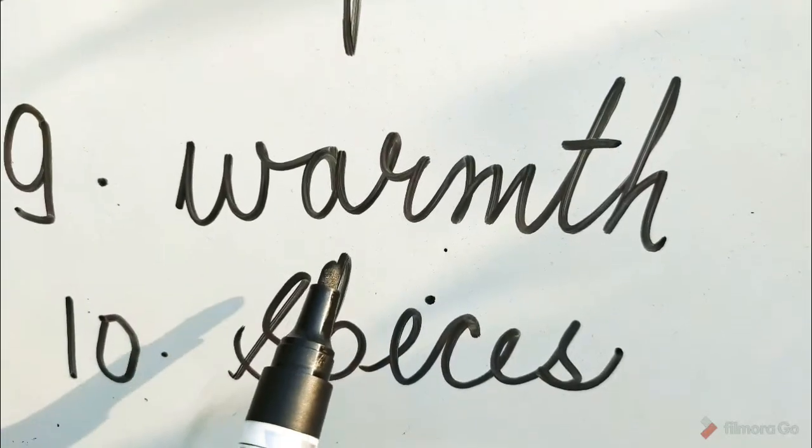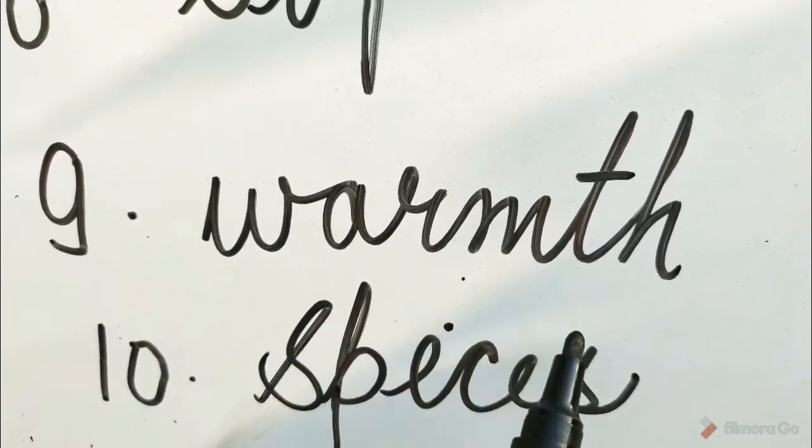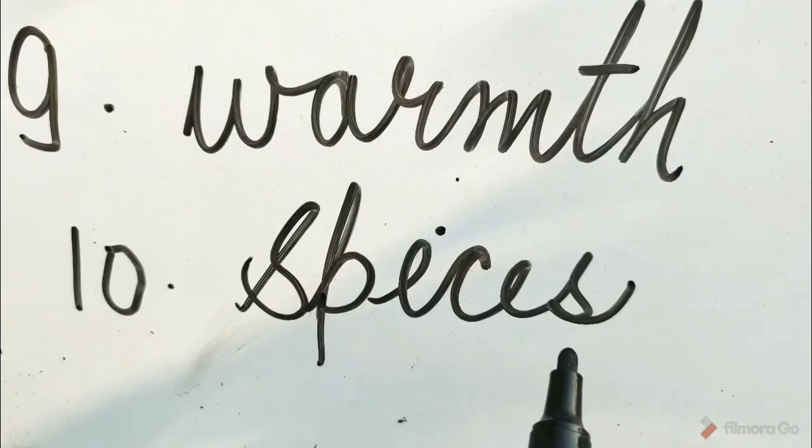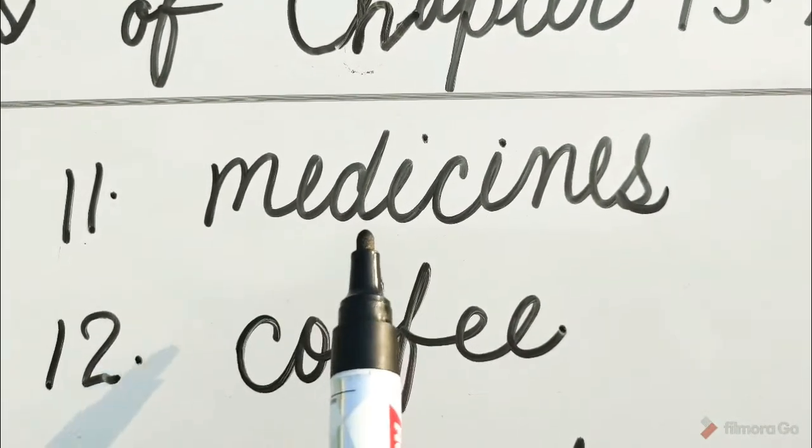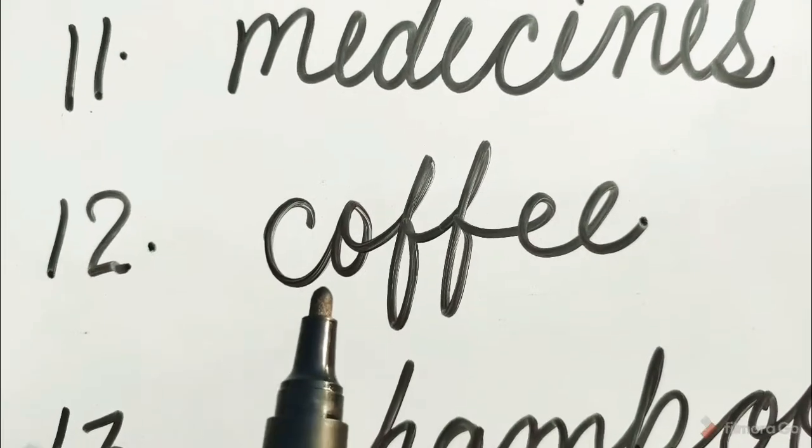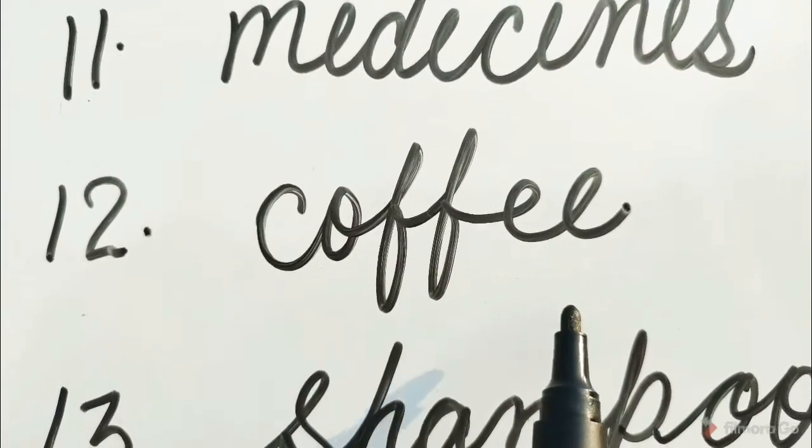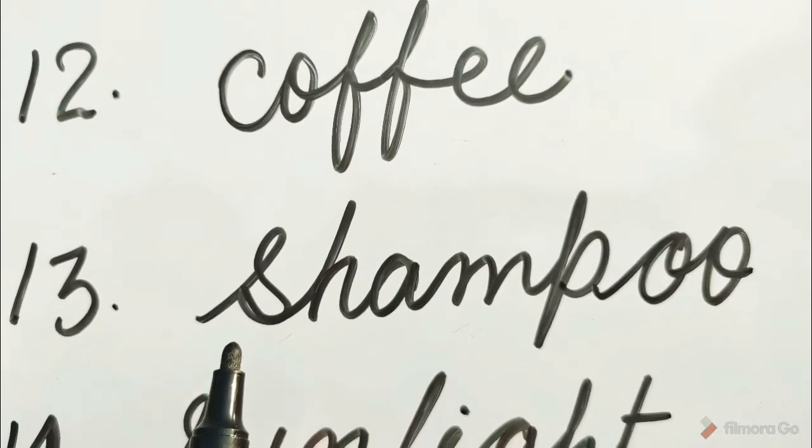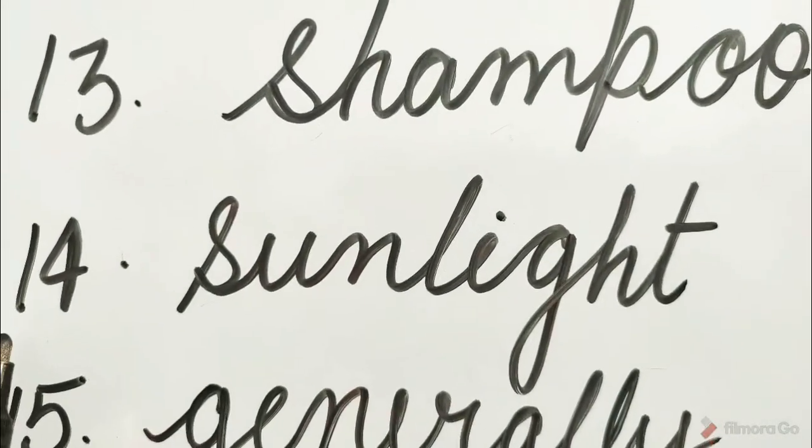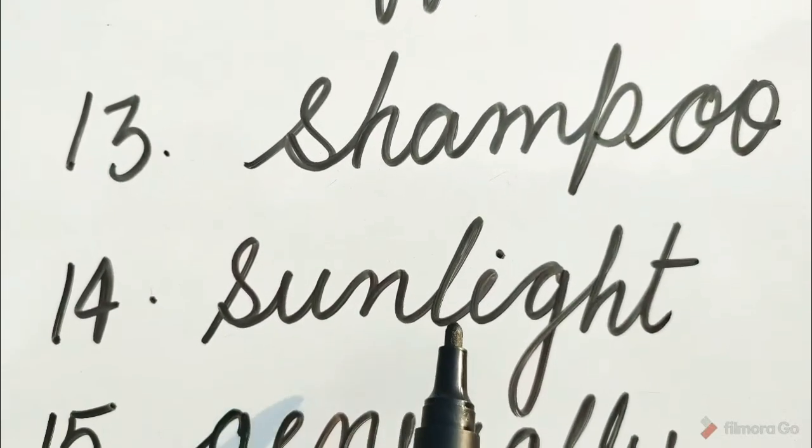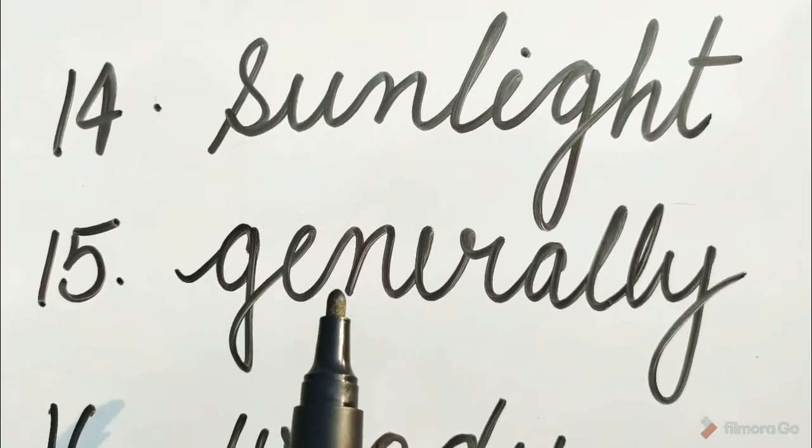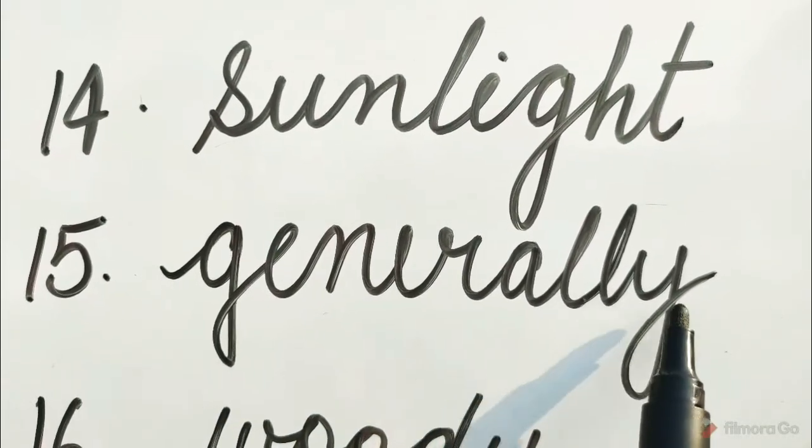Number 9: W-A-R-M-T-H, warmth. Number 10: S-P-I-C-E-S, spices. Number 11: M-E-B-I-C-I-N-E-S, medicines. Number 12: C-O-F-F-E-E, coffee. Number 13: S-H-A-M-P-O-O, shampoo. Number 14: S-U-N-L-I-G-H-T, sunlight. Number 15: G-E-N-E-R-A-L-L-Y, generally.